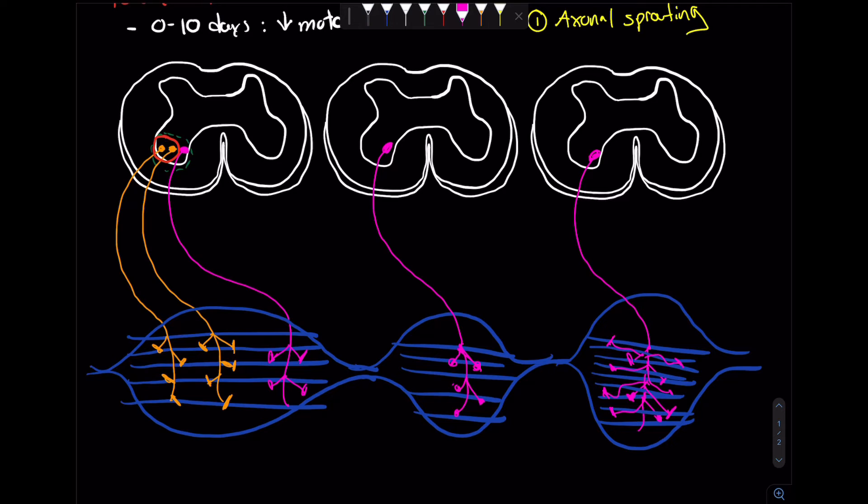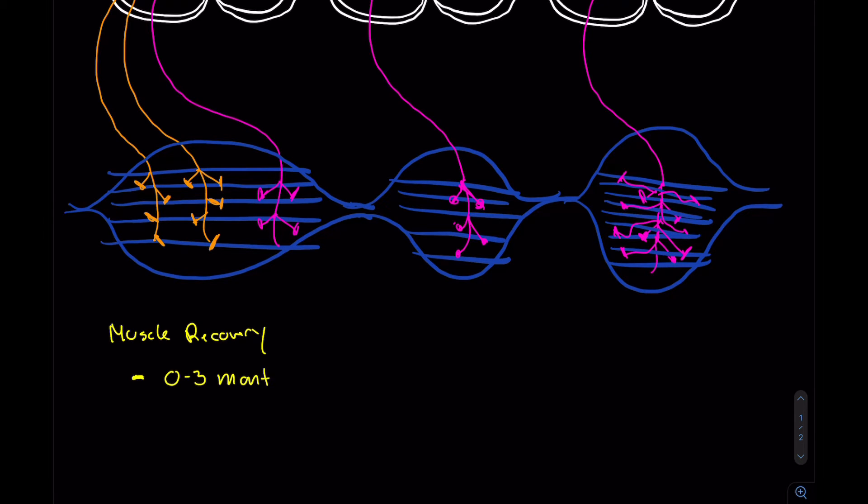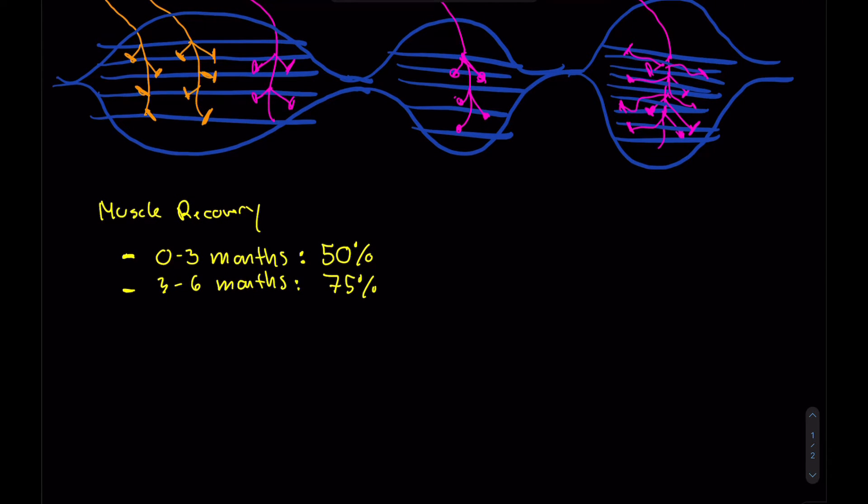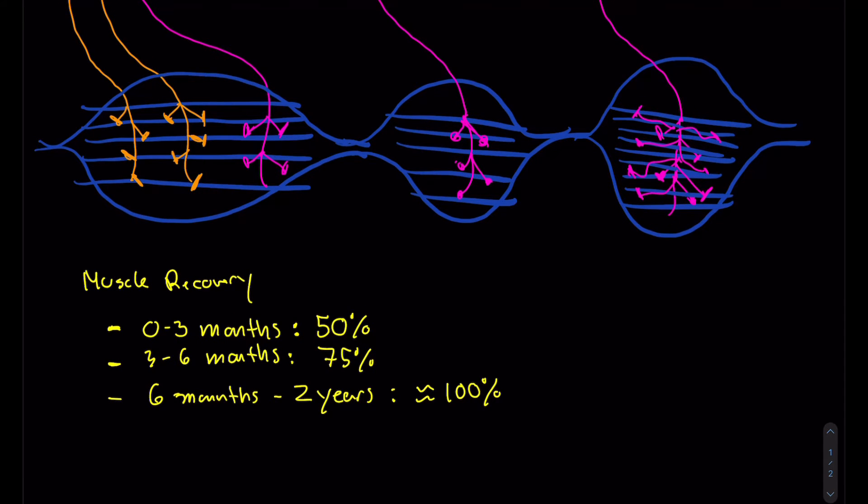Through the process of axonal sprouting here, the body will be able to regain 50% of its muscle mass during the first three months. If you leave it another three months, so three to six months, we'll be able to get around 75% of muscle mass. And you can go up to about six months to two years, you'll have around 100% muscle mass or muscle capacity. This is an approximation. Some cases, it will never return to the way it was before. But this is possible after two years. It all depends on the person.